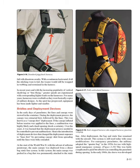With a continuous horizontal harness, if all the stitching were to fail, the wearer would still be wrapped in webbing and restrained. In recent years, with the increasing popularity of vertical skydiving or free flying, greater speeds are experienced with corresponding higher loads on harnesses. For many years, harnesses were overbuilt as they were basically copies of military designs. As the sport has progressed, equipment has been made lighter and smaller. Bridles and Deployment Devices. In the early days of parachutes, the lines and canopy were stowed in the container. During the deployment process, the canopy was extracted first, followed by the lines—known as a canopy-first deployment. If the canopy inflated before tension was applied to the lines, a malfunction was highly likely and a hard-opening shock was certain.